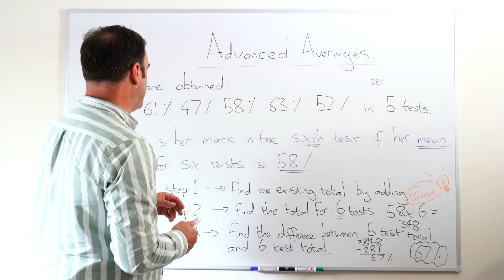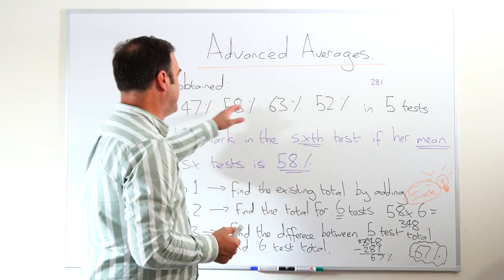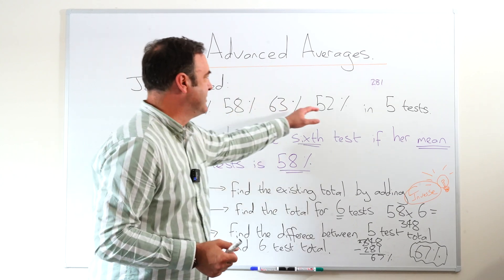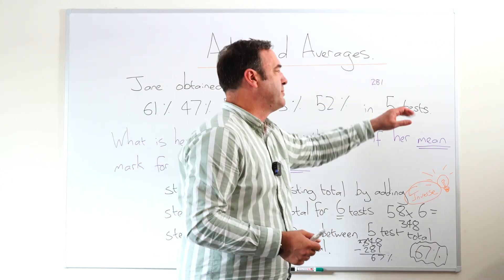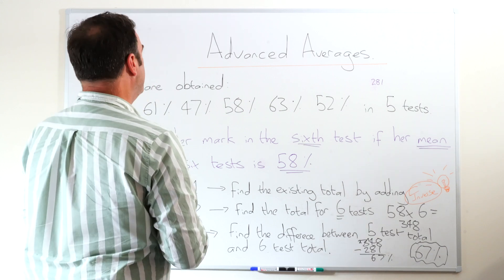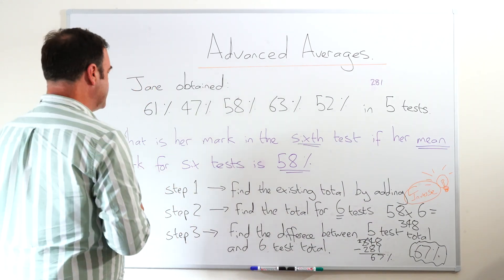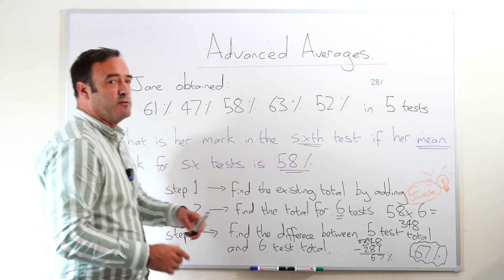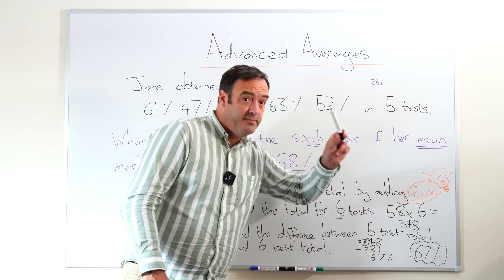Now a part A question might just ask us to find the average of this so you add these up, comes to 281 and divide by five, but that's not what we're talking about here. Here we are talking about something a bit more complicated, there's a twist and it involves our friend inverse.